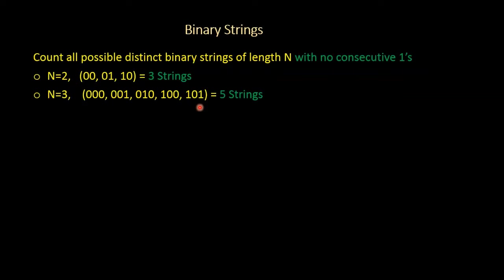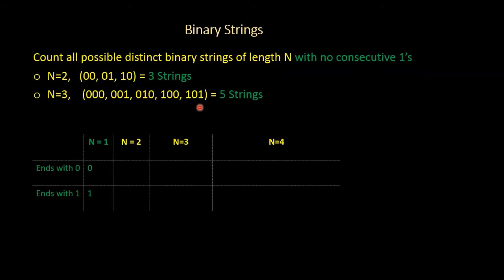Let's try to understand how to create these strings through a simple procedure by filling up this table. We'll understand how to create these strings and eventually understand what the solution might be to solve this problem, and then we'll formulate an algorithm. In this table, you have columns as lengths of strings from n equal to 1 to n equal to 4, and rows as the strings — specifically strings which end with 0 and which end with 1.